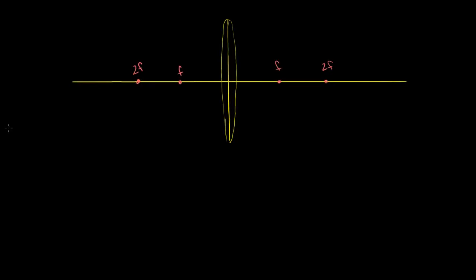Like we did with parabolic mirrors, what I really want to do in this video is put objects at different distances relative to this convex lens, and just think about what its image will look like. The whole point is to go through all of the different situations, and also get practice in how to think about it. So let's first put an object out here that's more than two focal lengths away from the lens. When we dealt with parabolic mirrors, we talked about two focal lengths being our center of curvature — over here, we're just going to call it two focal lengths. So let's figure out what the image will look like as light gets refracted through this lens.